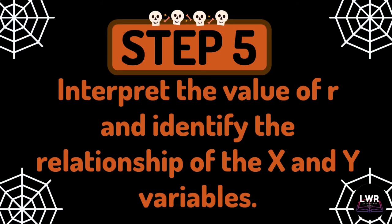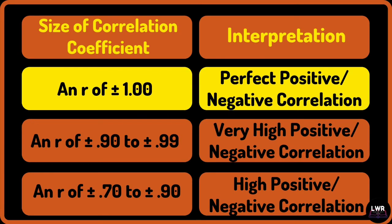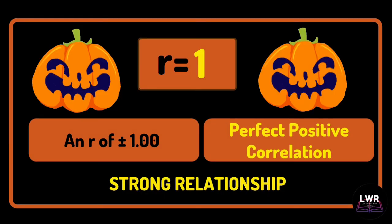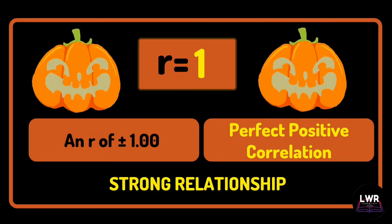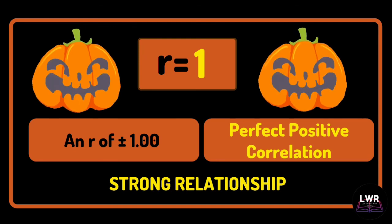The last step, step number 5, is to interpret the value of r and identify the relationship of the x and y variables. It is a perfect positive correlation because the correlation coefficient is equal to positive 1. We can conclude that the relationship between the weight of participants and the distance they covered is strong.